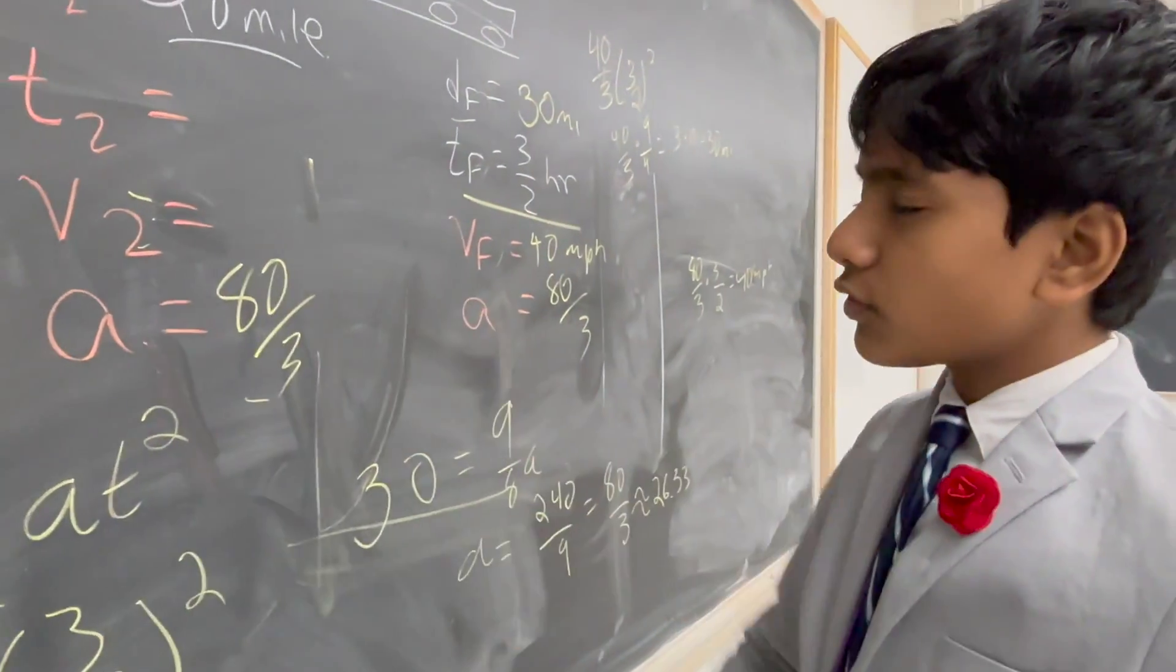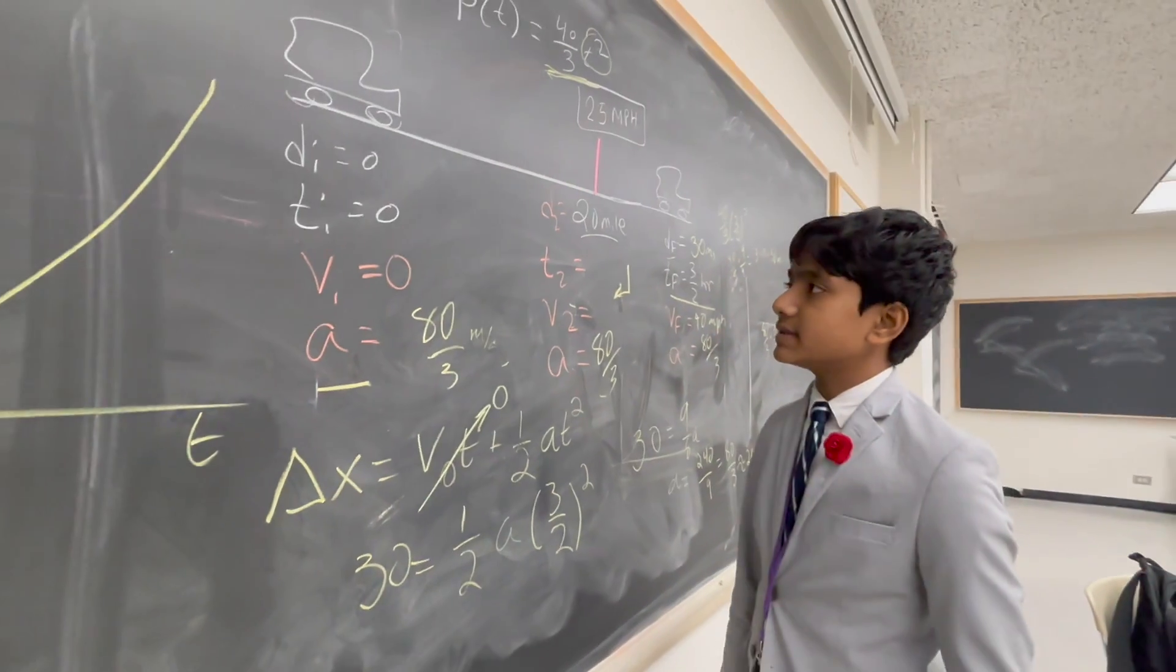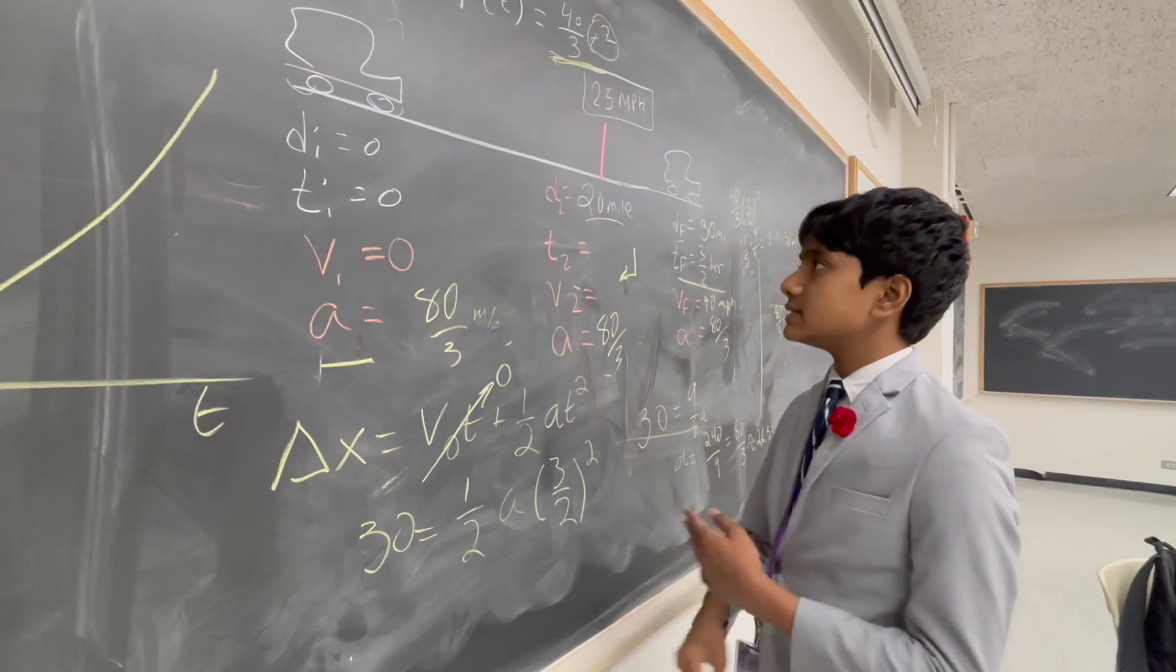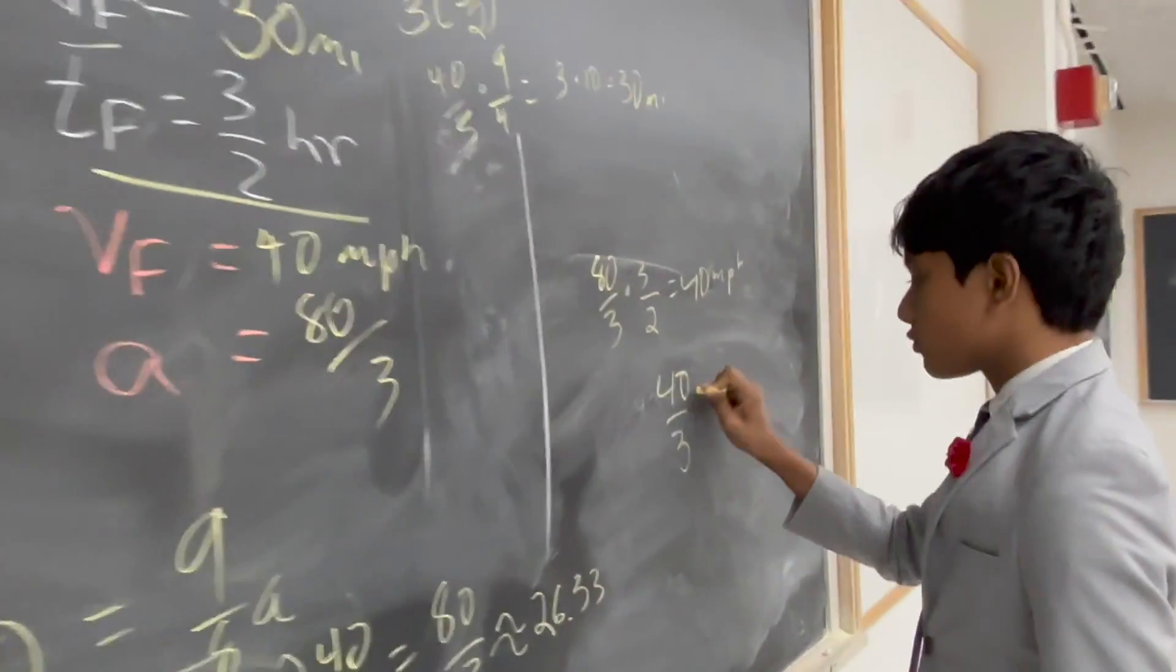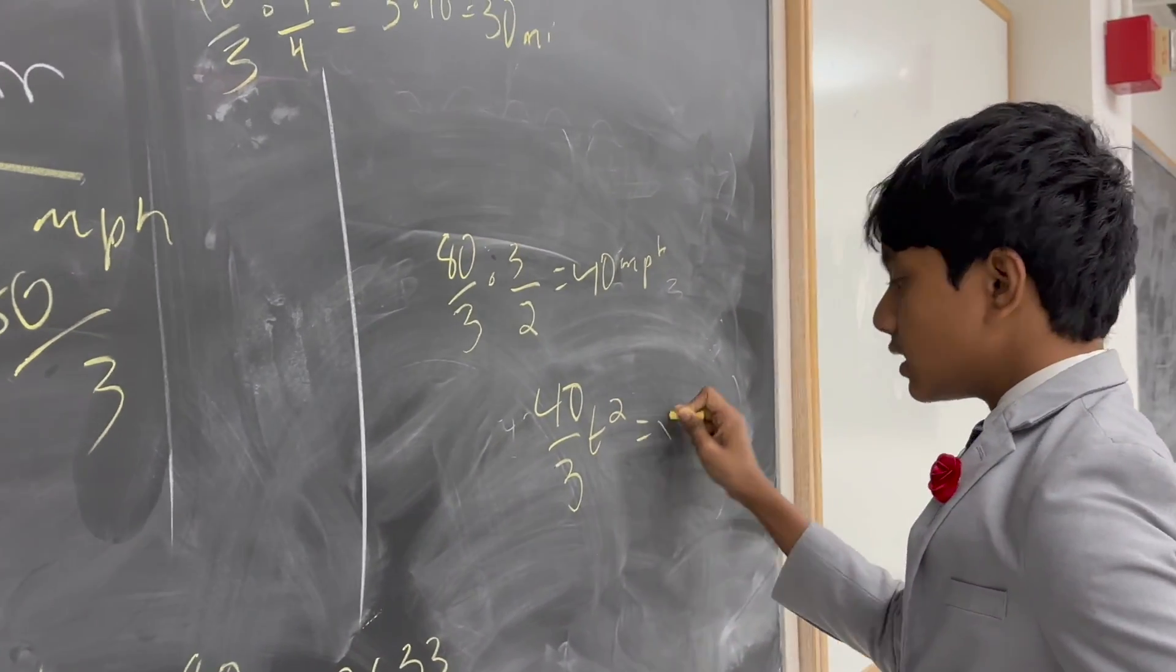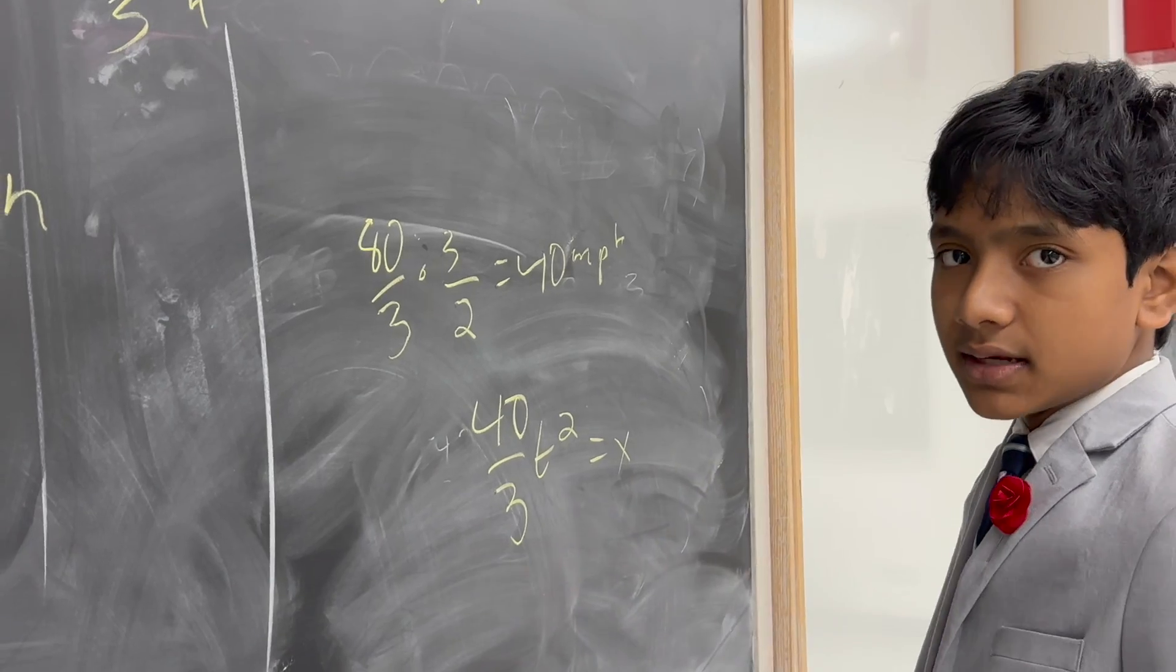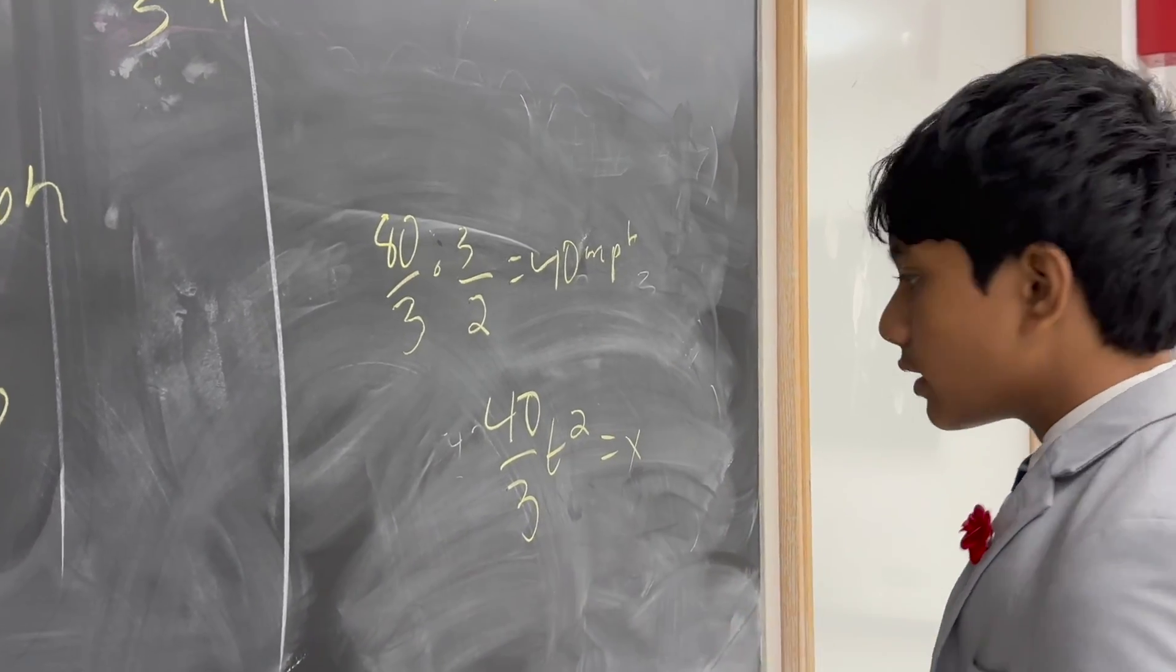So, then, first of all, let's figure out at what time this is happening. So, what we have to do is plug this in in reverse. Essentially, we have this function, right? 40 over 3t squared equals x. But the thing is, usually we know t and not position. This time, we know position, but not t. So, you have to solve for t.